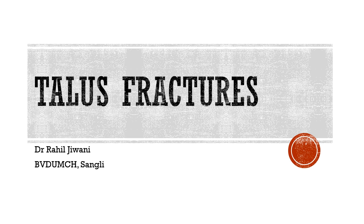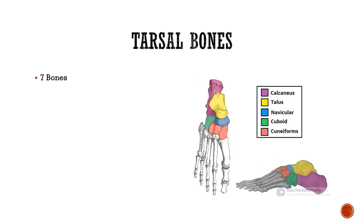Hello dear friends, today's topic is talus fracture. To start with, talus is part of the tarsal bones. Tarsal bones are present in the foot; there are seven tarsal bones. The upper row consists of talus, below it the calcaneus, then we have the navicular, then three cuneiforms and one cuboid.